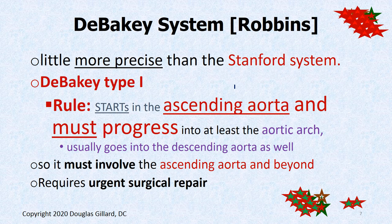The DeBakey system, from Robbins, is a little more precise. DeBakey 1: the rule says it has to be in the ascending aorta, just like a Stanford A. But unlike Stanford A, this one must progress — it has to go at least into the aortic arch. It doesn't care if it goes further, but it must involve the ascending aorta and some other piece of that aorta.